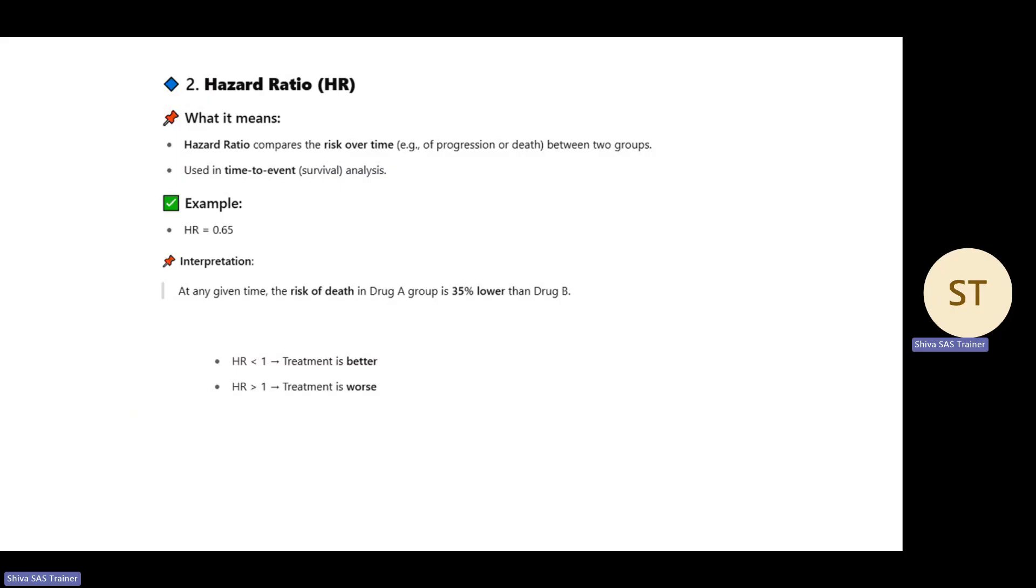It's 35% lower because you're getting 0.65, right? That's why Drug A group is 35% lower than Drug B risk. Risk over time, risk of death is lower.